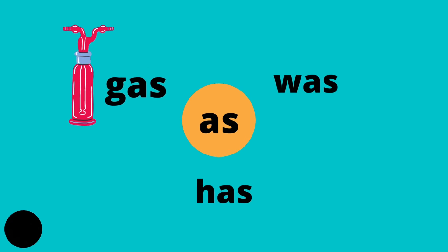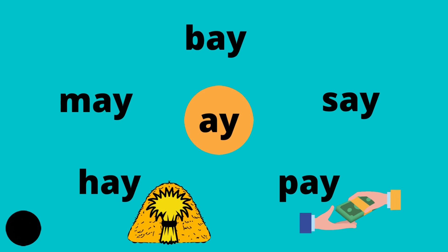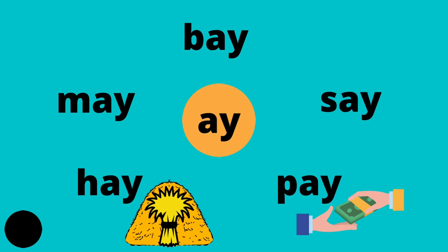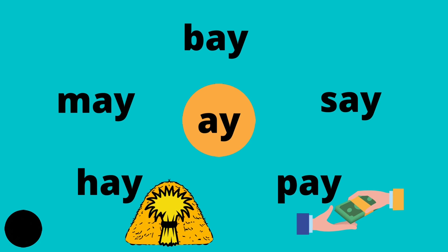Three-letter words that end with an S: gas, was, has. Three-letter words that end with a Y: pay, hey, may.